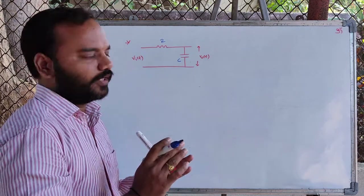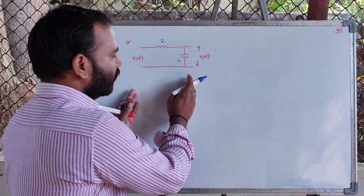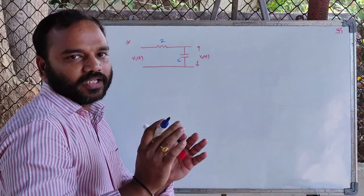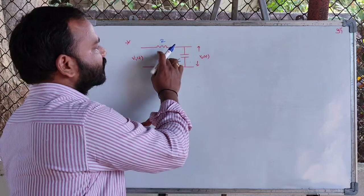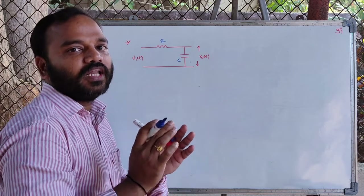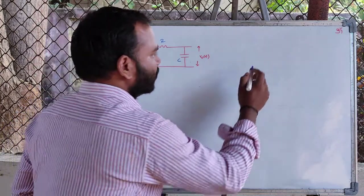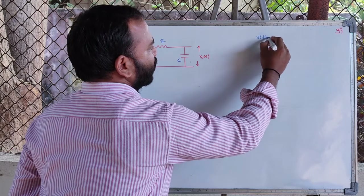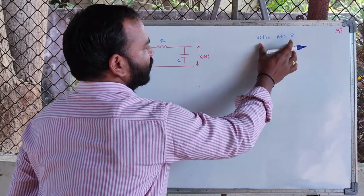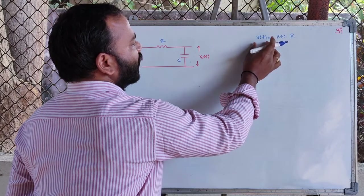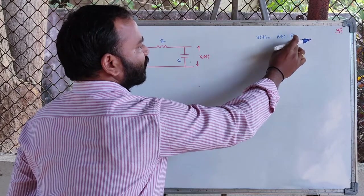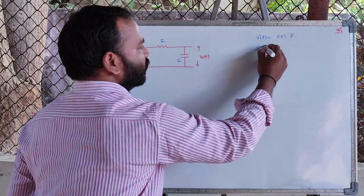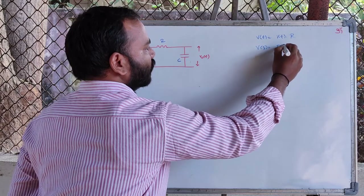Before proceeding to convert this analog filter into its digital equivalent, we will see basic mathematical preliminaries of this resistance and capacitance with respect to the Laplace transforms. If we have the expression for voltage V(t) = I(t) × R — the voltage across the resistor related to the current — and if we apply the Laplace transform, it is V(s) = I(s) × R.